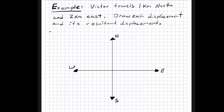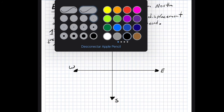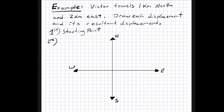That's our first step: the starting point. The second step is to draw the first vector. The first vector travels one kilometer to the north, which is the displacement of Victor. So we're going to say that this is the first vector and is one kilometer to the north.